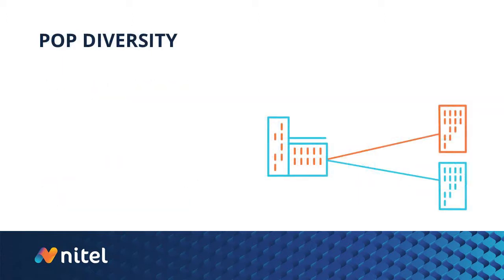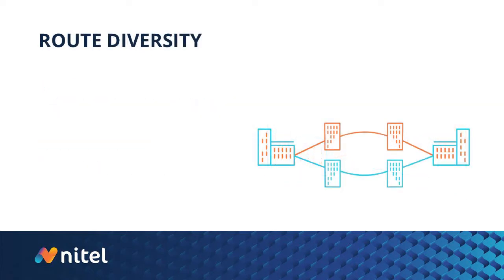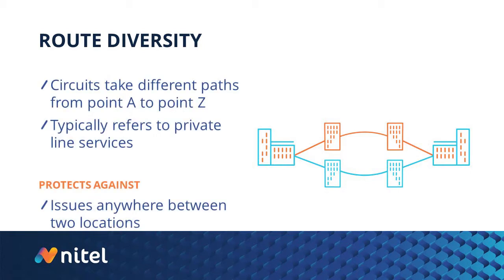Next, we have POP diversity. POP diversity is when circuits originate from separate points of presence, enabling traffic to be routed through a secondary POP should the primary go down. Finally, route diversity ensures that a customer's traffic takes two separate paths from its origination to destination. This term is most often used in reference to private line or wave services.